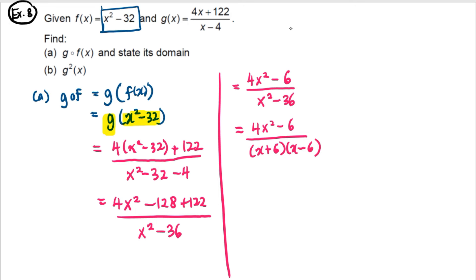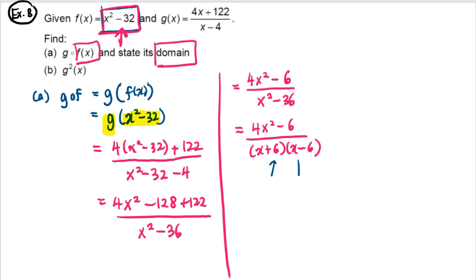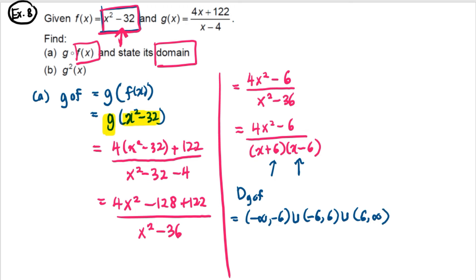The domain of g ∘ f: since x² - 36 ≠ 0, we need x ≠ ±6. Therefore the domain is (-∞, -6) ∪ (-6, 6) ∪ (6, ∞) — any real number except -6 and 6.